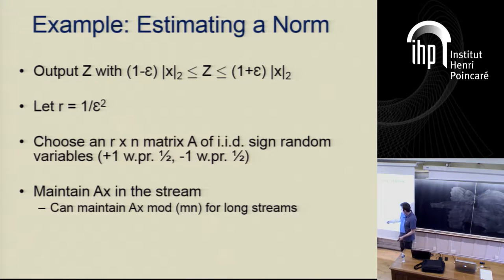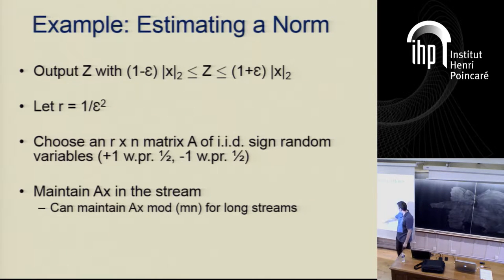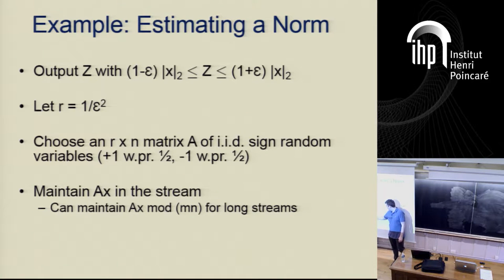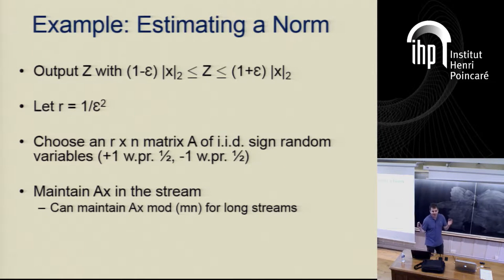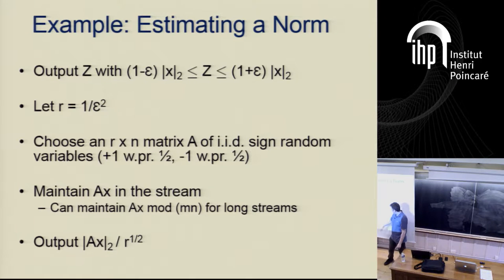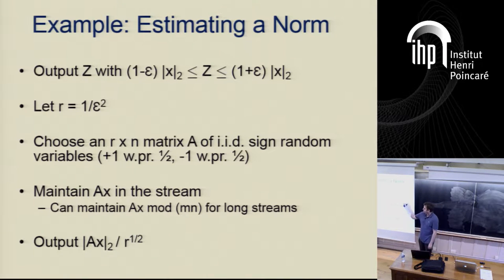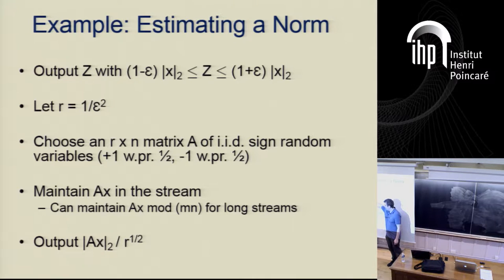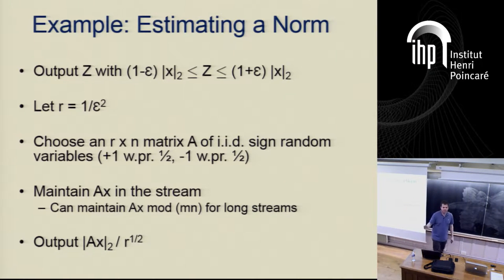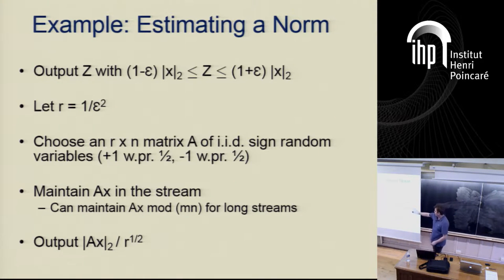At intermediate points in the stream, some coordinates of x may be very large, even though at the end they're all bounded by M. So I maintain Ax mod Mn, since all coordinates of Ax have magnitude at most Mn when x has magnitude at most M and A is a ±1 matrix. At the end, Ax mod Mn equals Ax. At the end of the stream, output the Euclidean norm of Ax rescaled. By the Johnson-Lindenstrauss lemma, this is correct. The space complexity is r times log n, and you can generate the sign random variables pseudo-randomly with four-wise independence using log n bits.